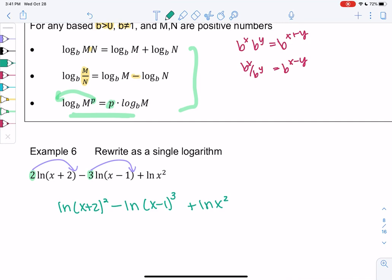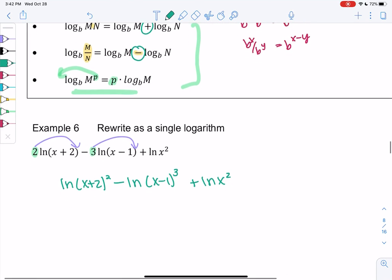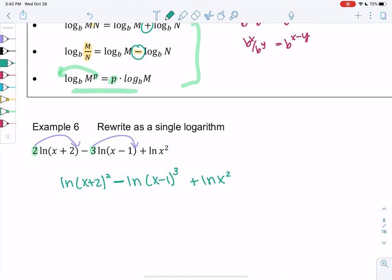And now we can combine them using addition and subtraction. Anything that's subtraction becomes division. So when I make this a single log, we get ln of x plus 2 squared. We're going to divide by x minus 1 cubed because that's subtraction. And then multiply by the x squared. And now we have a single ln.